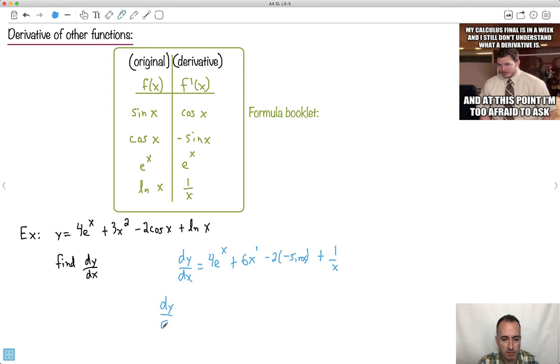So finally, we're going to be done here. We're just going to fix it all up. So we'll say it's 4 e to the x. That was awesome, right? This one was ez, pardon my horrible joke, because e to the x just becomes e to the x. Okay, plus 6x.